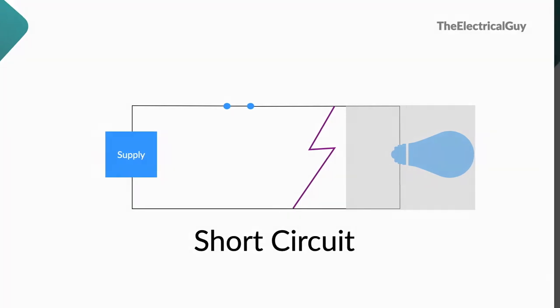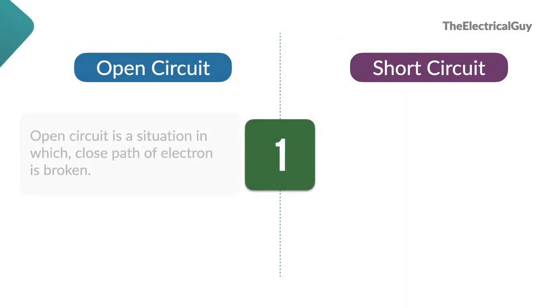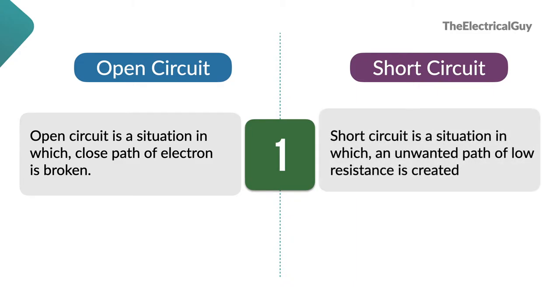So our first point would be, open circuit is a situation in which closed path of electron is broken, whereas short circuit is a situation in which an unwanted path of low resistance is created. So both are exactly opposite. In one case, the path is broken and in other, new path is created.